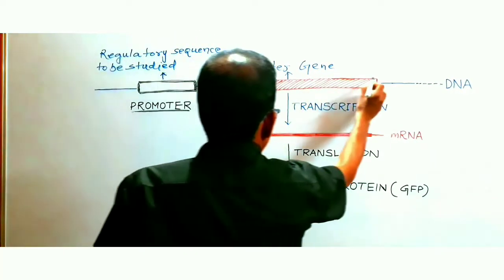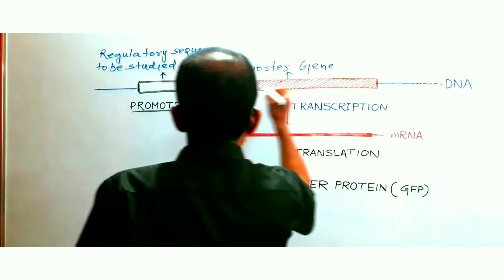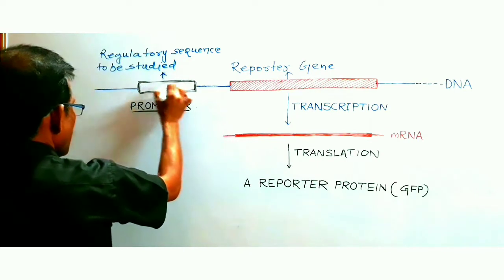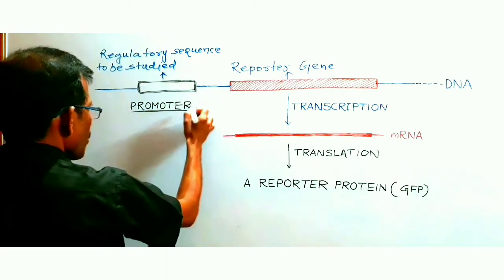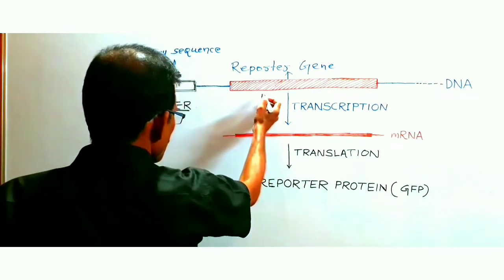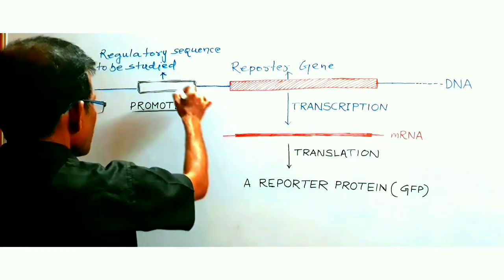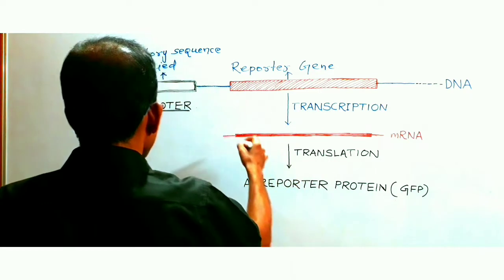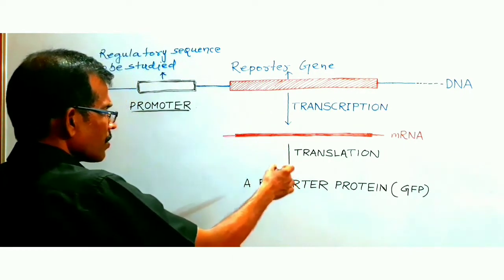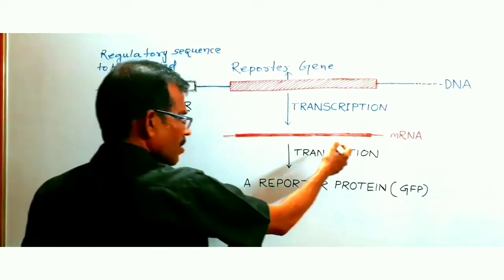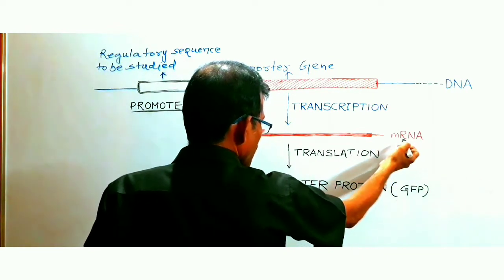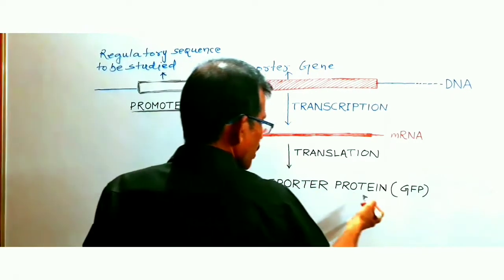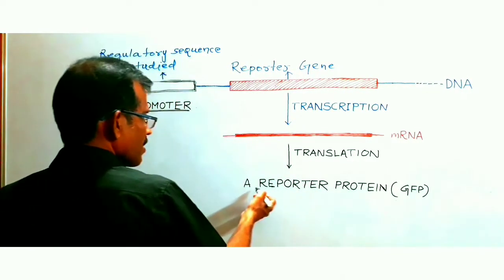In practice, a reporter gene is fused with a regulatory sequence belonging to another gene — the regulatory sequence can be a promoter sequence or any other sequence. By fusing the reporter gene with a gene regulatory sequence, we can study the function of that regulatory sequence. The reporter gene is transcribed, resulting in the formation of mRNA, which is later translated to form the reporter protein, for example GFP. The amount of protein formed can easily be measured through various assays, allowing study of the function of various gene regulatory elements.